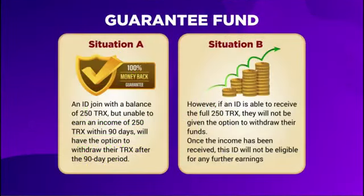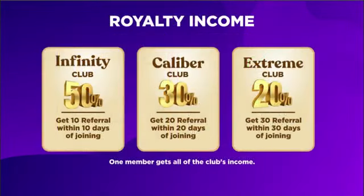The guarantee fund works in two situations. In situation A, if an ID joins with 250 TRX but is unable to earn 250 TRX within 90 days, they can withdraw their TRX after that 90-day period. In situation B, if an ID receives the full 250 TRX in income, they will not have the option to withdraw funds, and once income is received the ID is no longer eligible for further earnings.